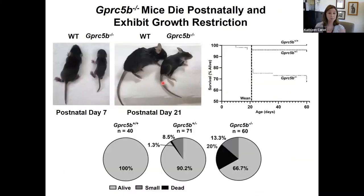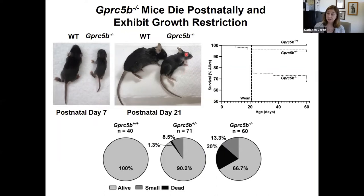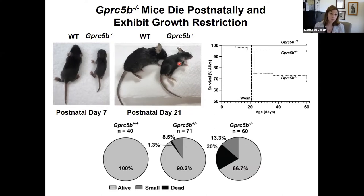If we allow these mice to be born, GPRC5b null mice are clearly growth restricted — reported by other groups but not rigorously quantitated before. A postnatal day 7 pup is much smaller than its littermate, and even at postnatal day 21 these animals fail to thrive. Twenty percent die by weaning. Harkening back to the established role of lymphatics in the intestine, a deficit of GPRC5b within the small intestine could be associated with poor nutrient and lipid absorption leading to this growth restriction — still being studied.